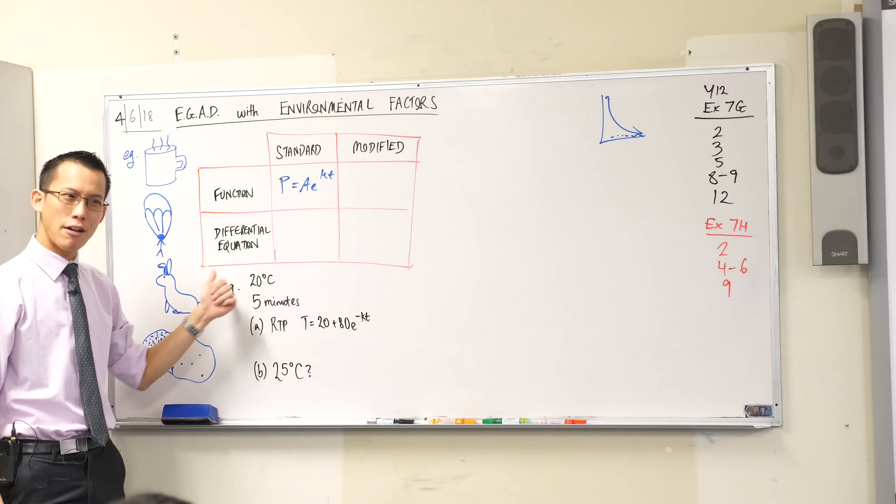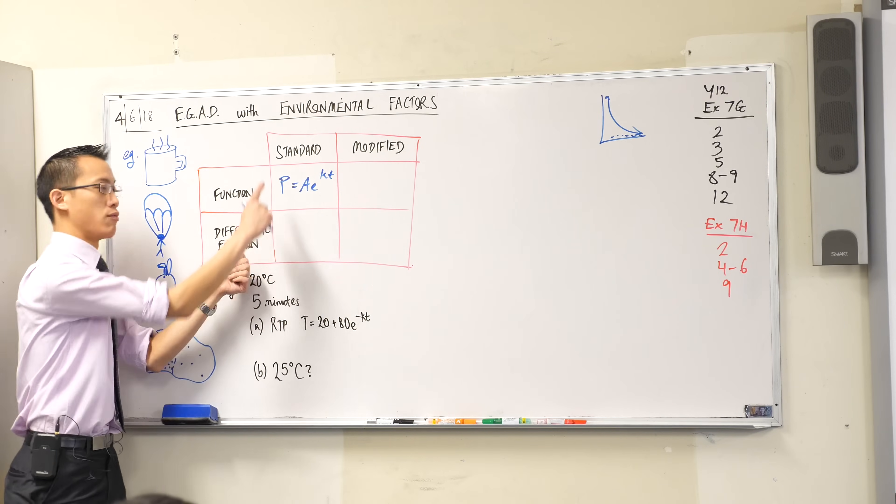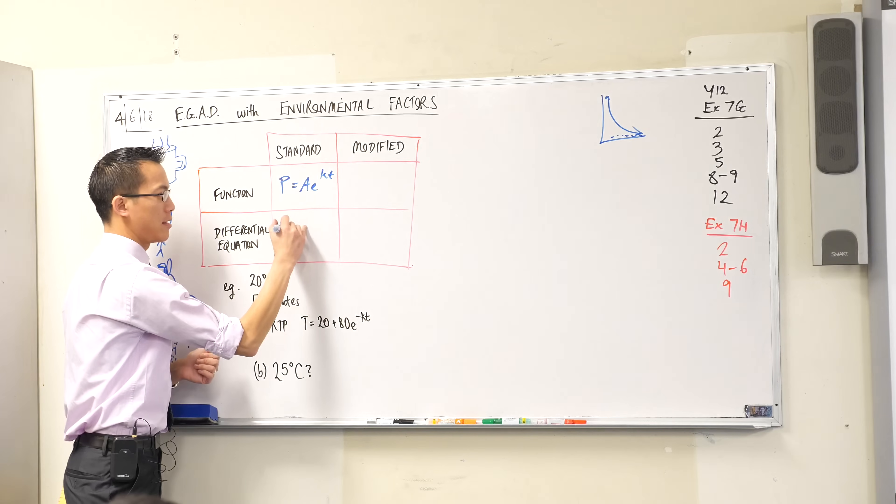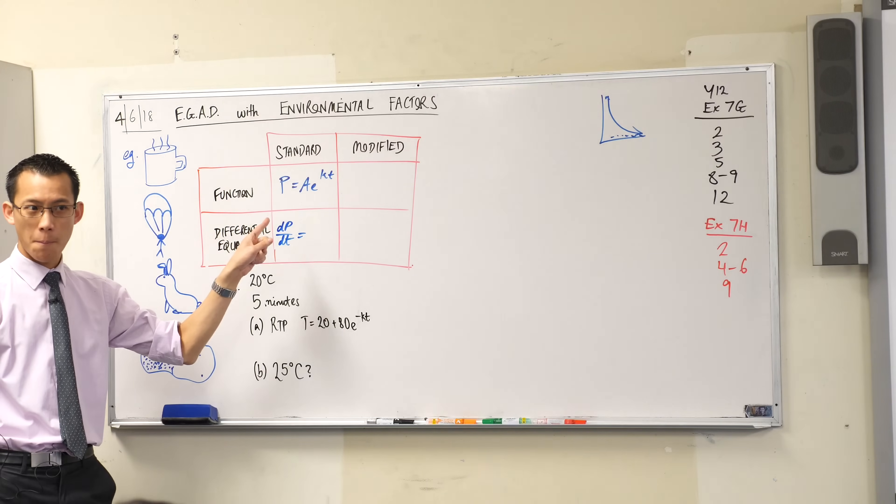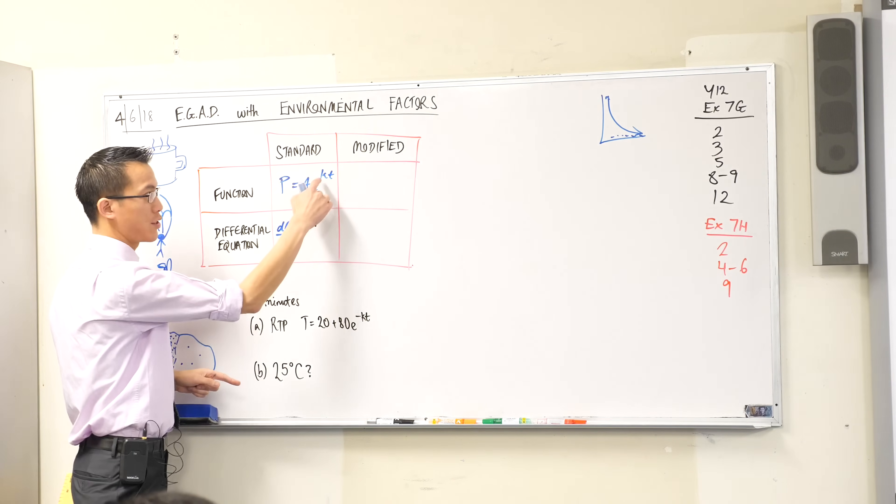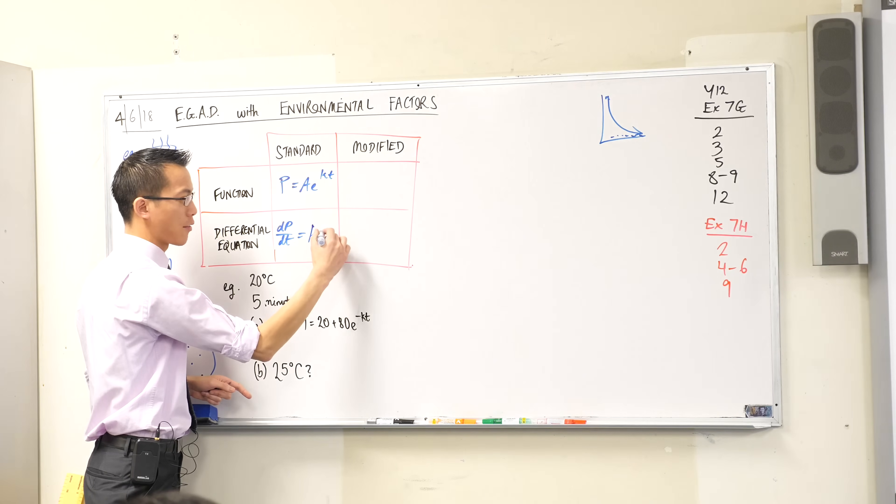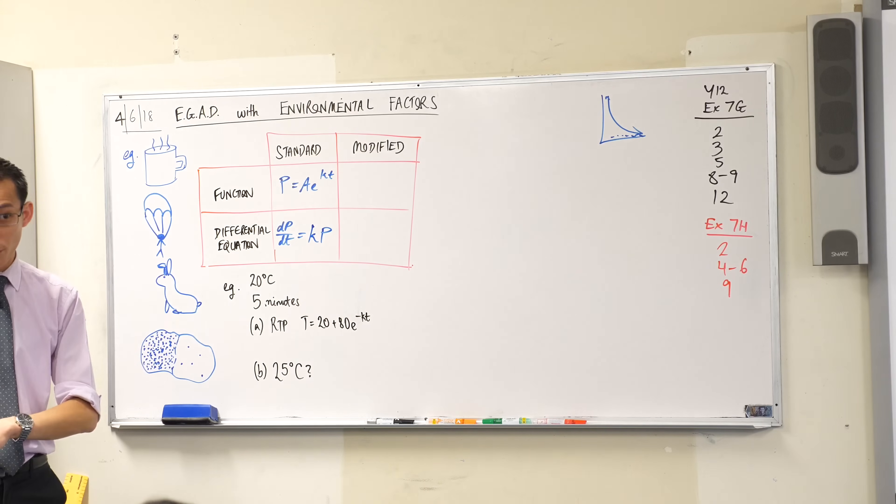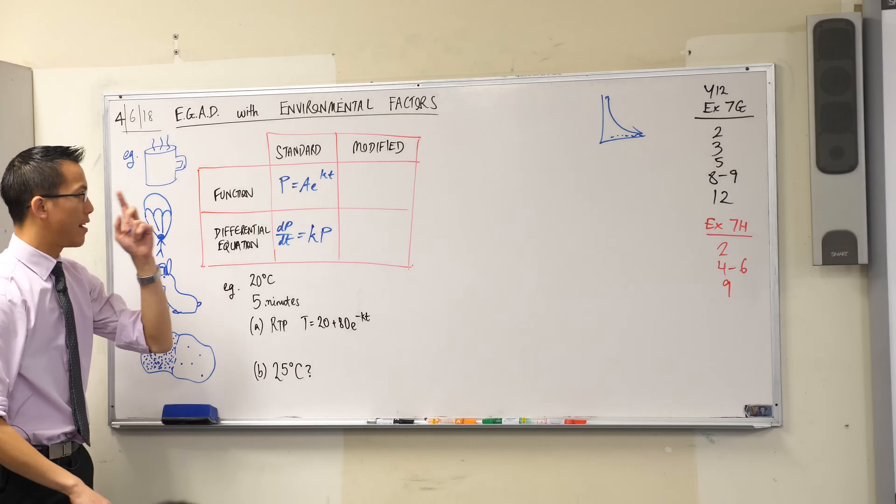We looked at the differential equation that relates the derivative with the original population or mass or temperature. dP/dt is going to be equal to what? It's just going to be kP, because when you differentiate this your inside derivative is k and it comes out the front. If it were decay we'd just have a minus sign at the front.